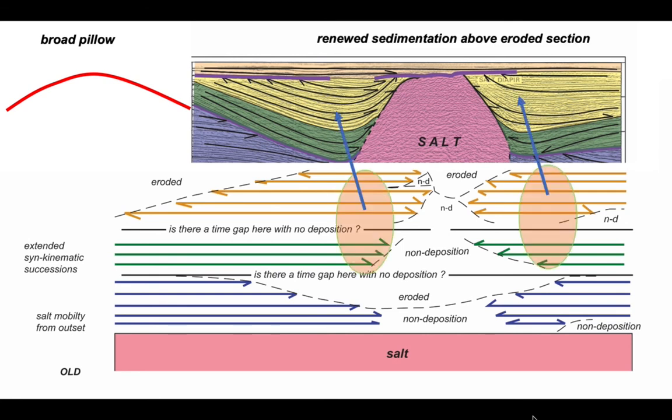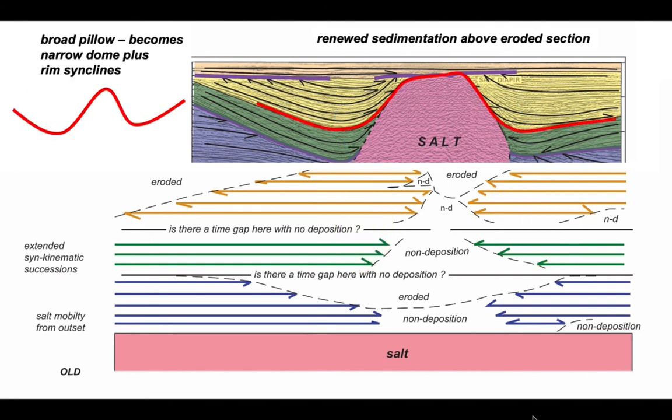So renewed sedimentation above the eroded section, implying that our broad pillow section subsides in the flanks. So we have a narrow dome out of the broad pillow and some of the dome flanks have subsided to create rim synclines.